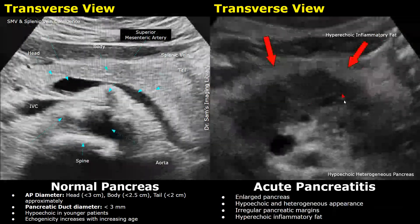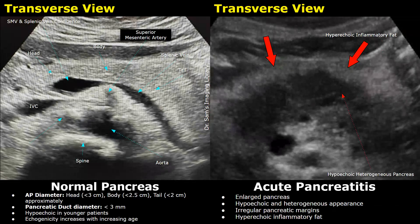This is a normal pancreas in an older patient. The echogenicity of the pancreas is higher than in previous normal images. With advancing age, there is fatty replacement of the pancreatic parenchyma, which is the reason it appears hyperechoic, but it still has a homogeneous echo texture.